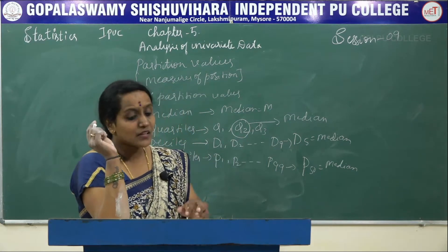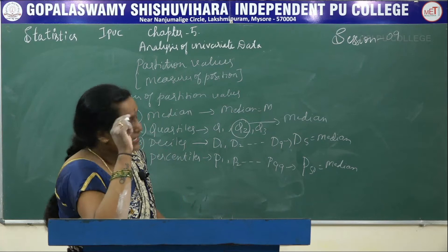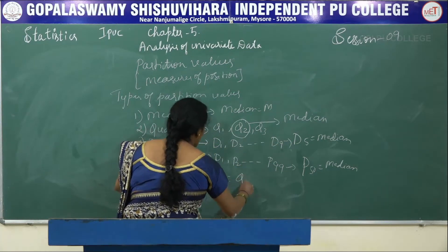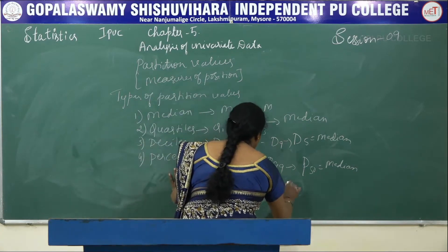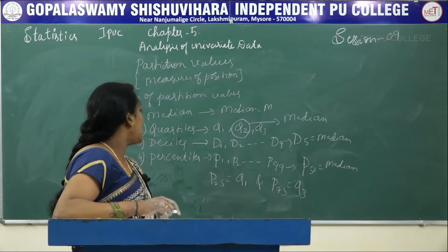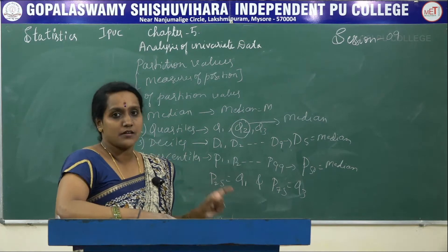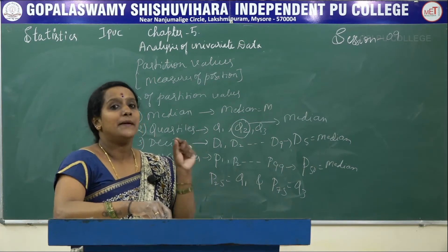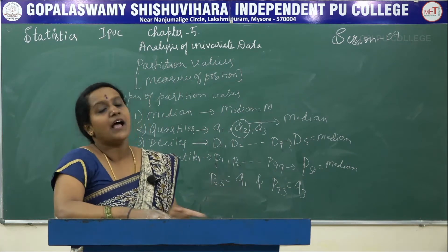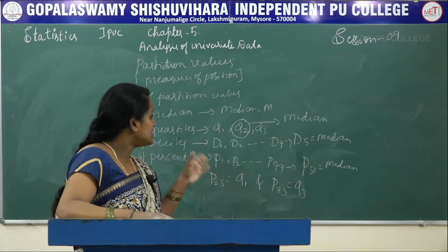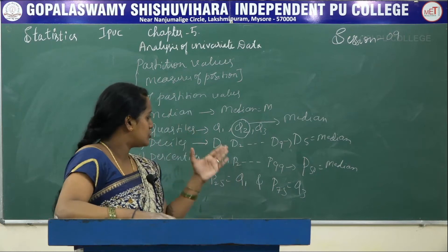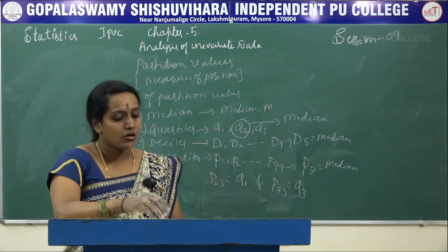In percentiles, P25 is equal to Q1 and P75 is equal to Q3. So when we divide the given data into hundred equal parts, the 25th value we call as Q1 and the 75th value we call as Q3. Q2, D5, and P50 are all equal to the median.